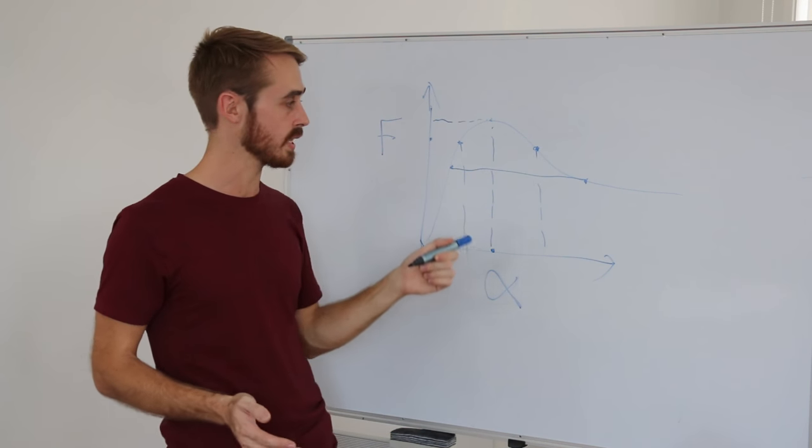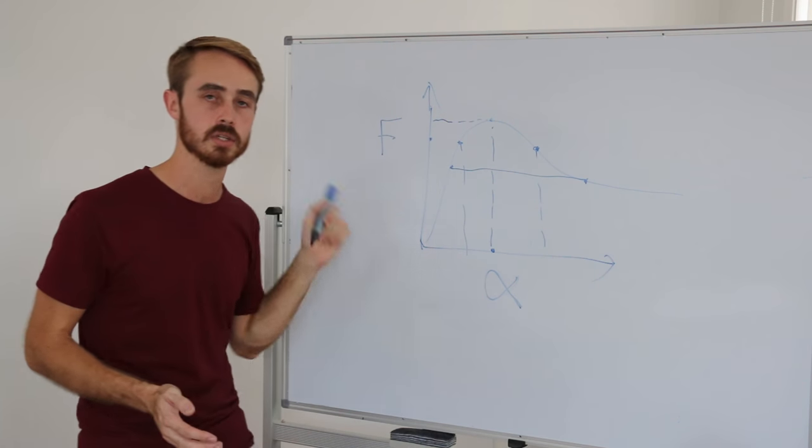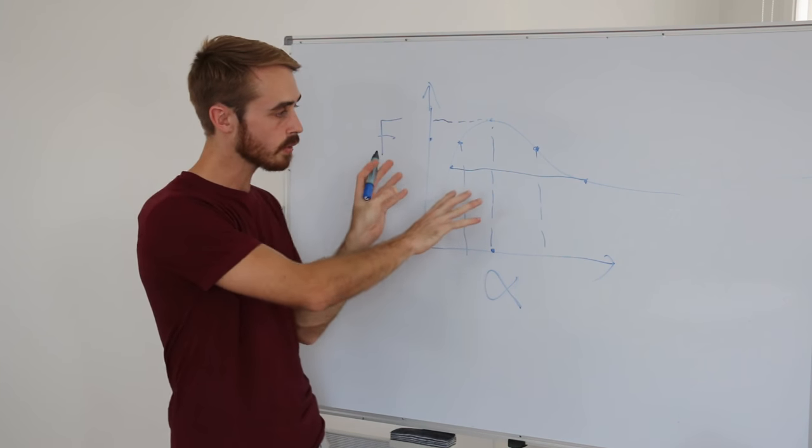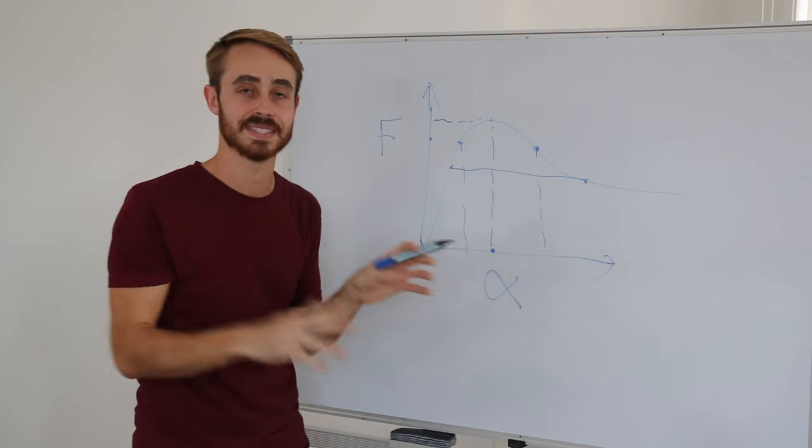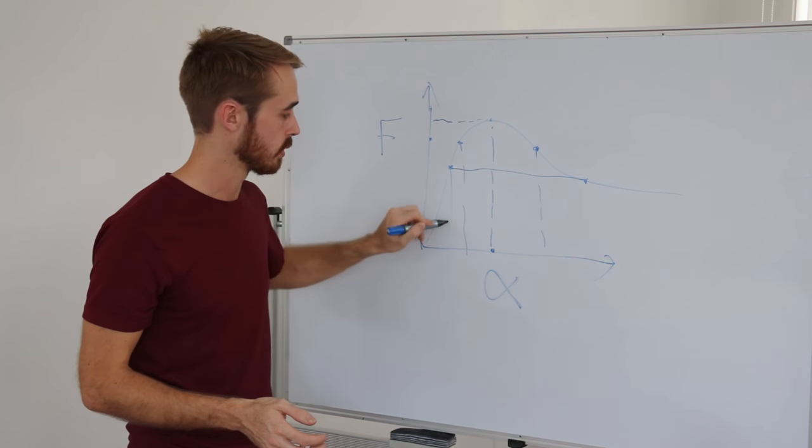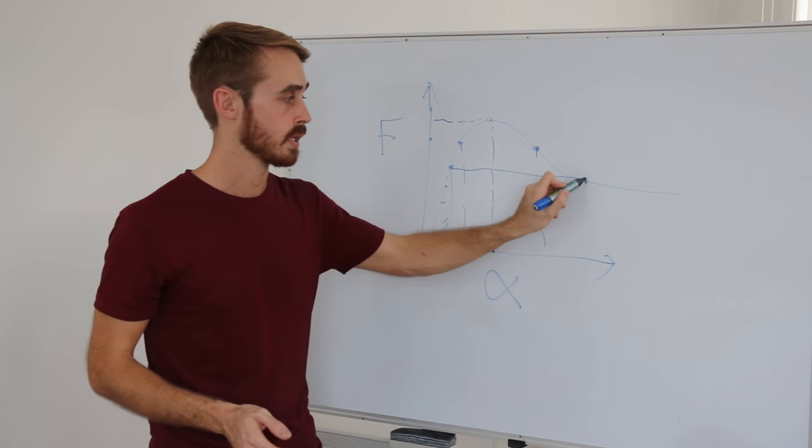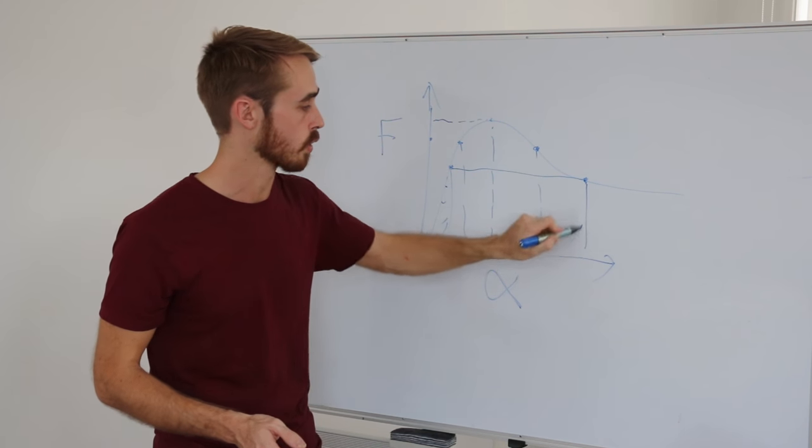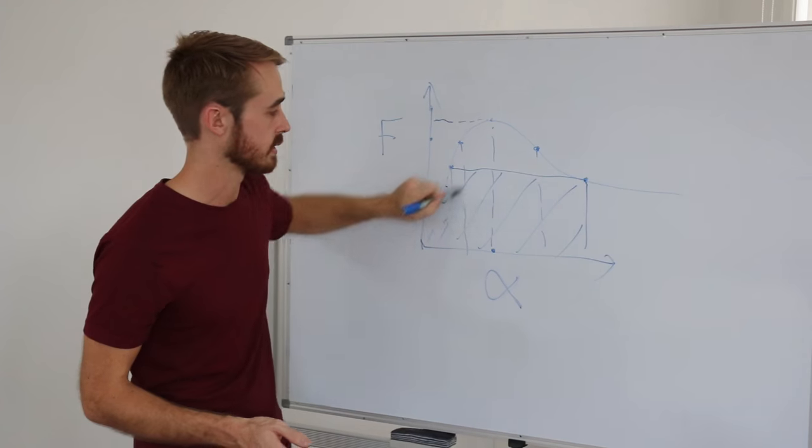Now the important thing to note here is that we're looking at a deflection and a force here. So we can think of the area under the curve as energy being put into the tire. So if you drive on this side of the curve, you're going to put less energy into the tire. If you drive over here, you're going to put more energy into the tire.